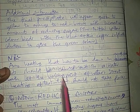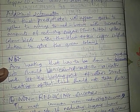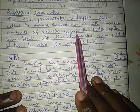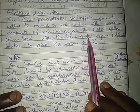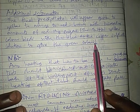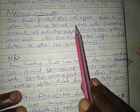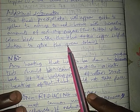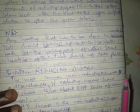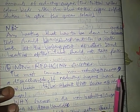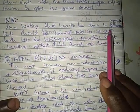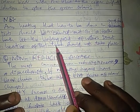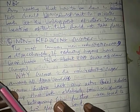Additional information: the final precipitate will appear green to yellow to orange to brick red, with increasing amounts of reducing sugar. The initial yellow color blends with the blue of the copper sulfate solution to give the green color. As the reaction proceeds, more precipitate forms and the color deepens until finally we get a brick red color. Any heating done in any food test should be carried out in a water bath at the boiling point of water. Direct heating of the test tube should not take place.